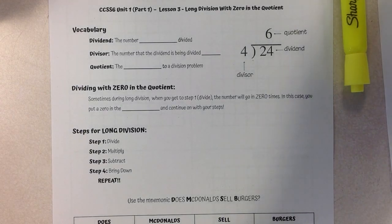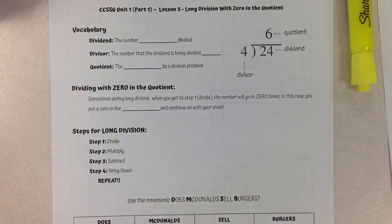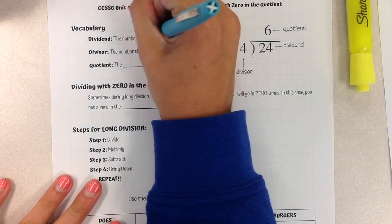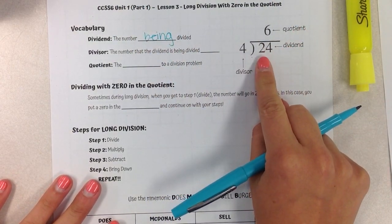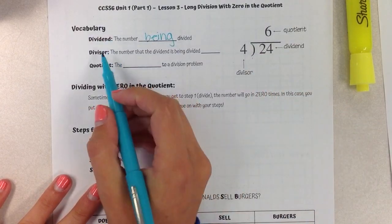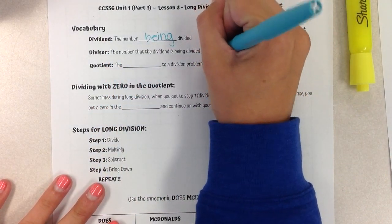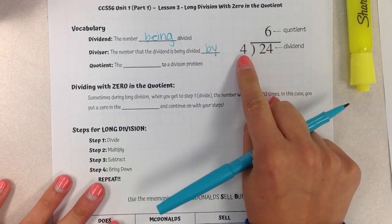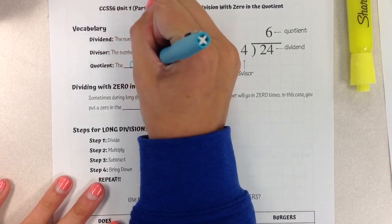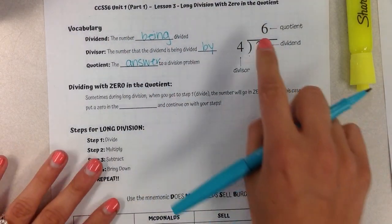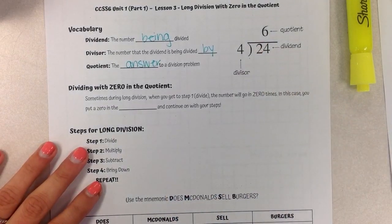Before that, we want to look at some key vocabulary terms. The dividend is the number being divided. So if you look over here, the 24 is the number that we're actually dividing. The divisor is the number that the dividend is being divided by. So 24 is being divided by 4, and the quotient is the answer to a division problem. So 6 is our answer. It's kind of a fancy way of saying answer.